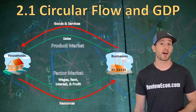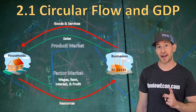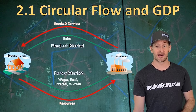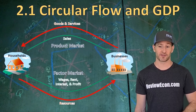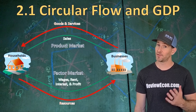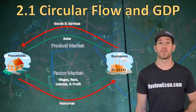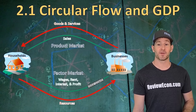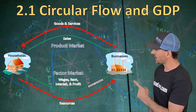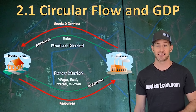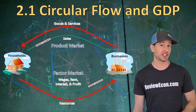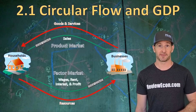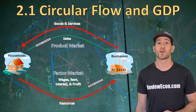Gross domestic product is a way of calculating the economic activity within this circular flow diagram. We have a couple of different methods — one deals with calculating in the factor market and the other two deal with calculating GDP in the product market. Let's look at those more closely now.